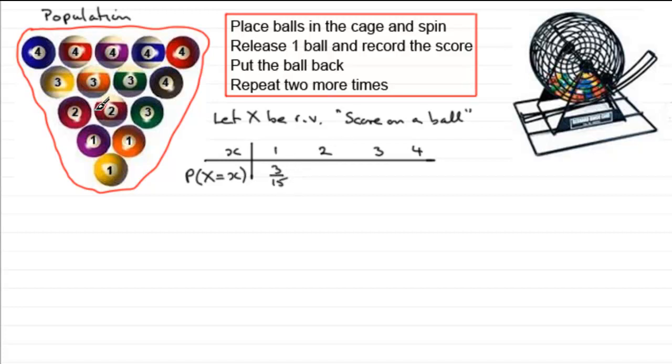And for 2, we've got two balls that have got a score of 2, so that probability would be 2 out of 15. For a score of 3, I can see that we've got 1, 2, 3 and this one here 4, so we've got a probability of getting a score of 3, which is 4 fifteenths.